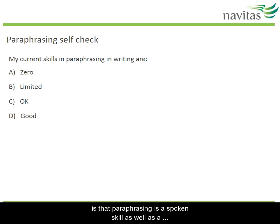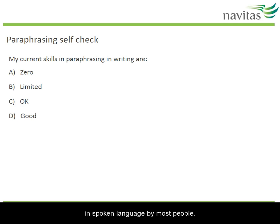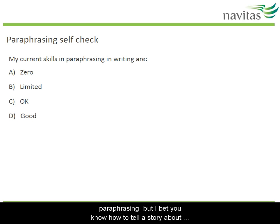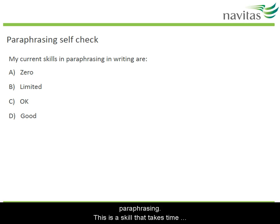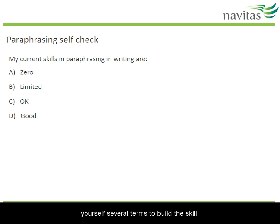One thing to point out is that paraphrasing is a spoken skill as well as a written one — actually, it's more often used in spoken language by most people. You might not have developed skills in written paraphrasing, but you already know how to tell a story about something that happened, or summarise the plot of a movie. That's paraphrasing too. So you're definitely not at zero; you just need to practise the reading-to-writing style of paraphrasing. This is a skill that takes time to master, so give it a go and allow yourself several terms to build it up.